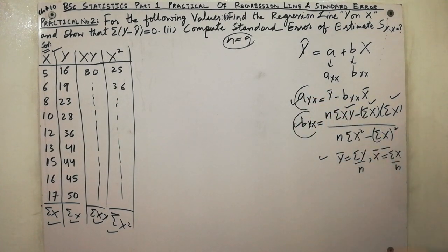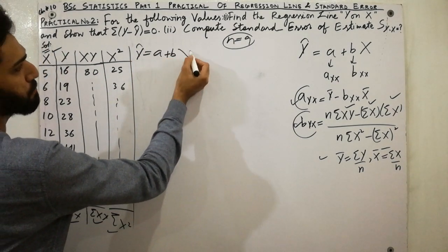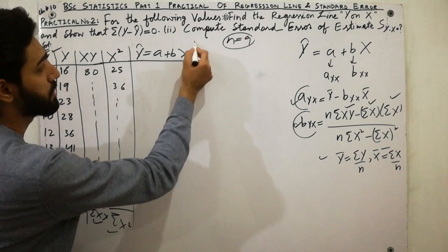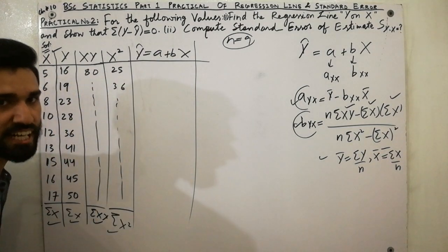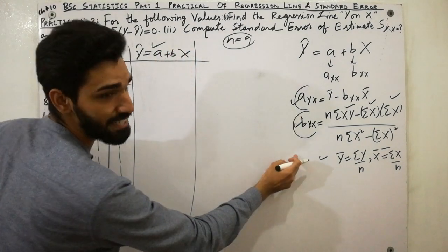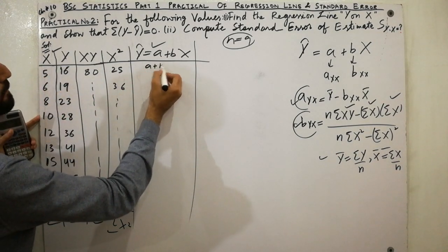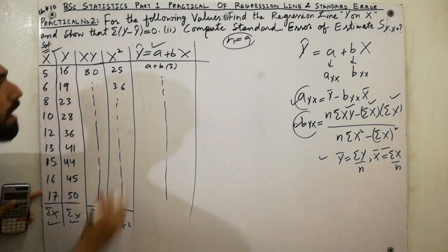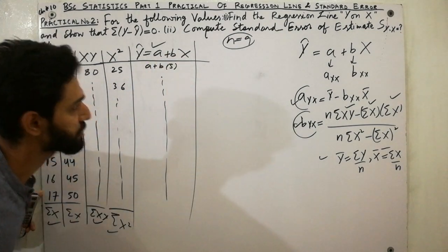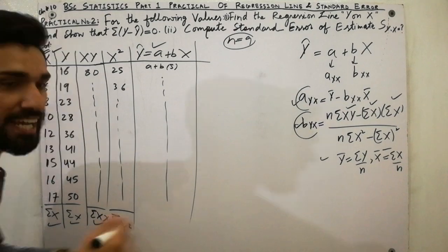Now you can easily calculate a and b, then write the regression line as ŷ = a + bx. To find the fitted values, plug in each x value — for example, when x = 5, compute ŷ = a + b(5). Similarly, solve for each remaining x value (6, 8, etc.) to get all ŷ values.